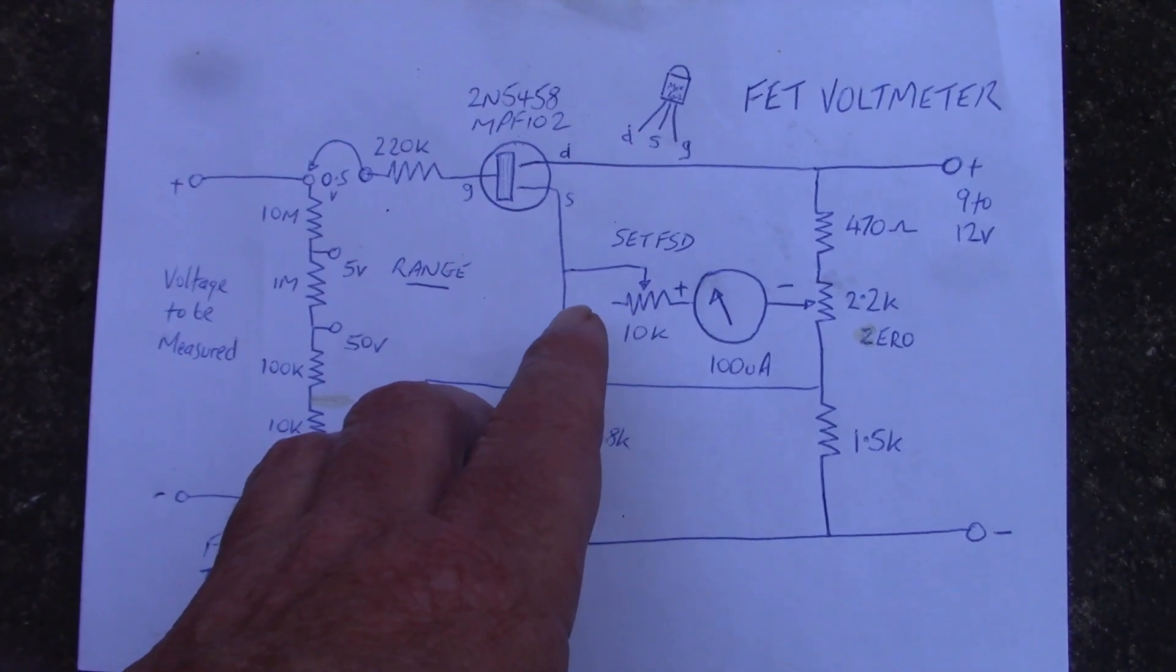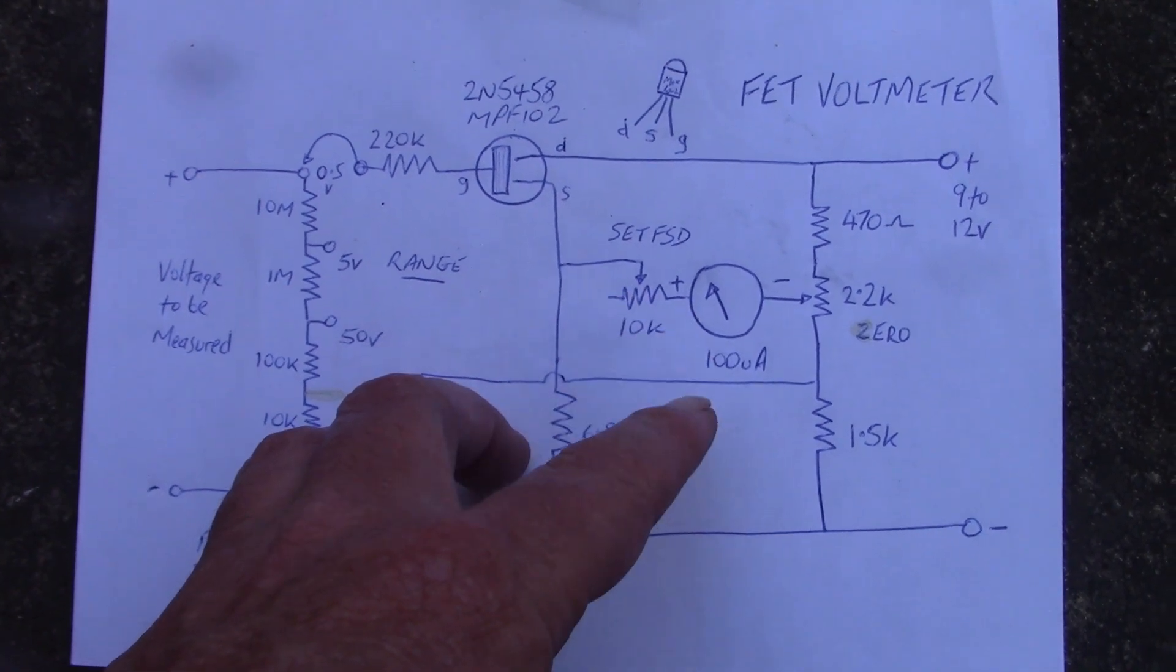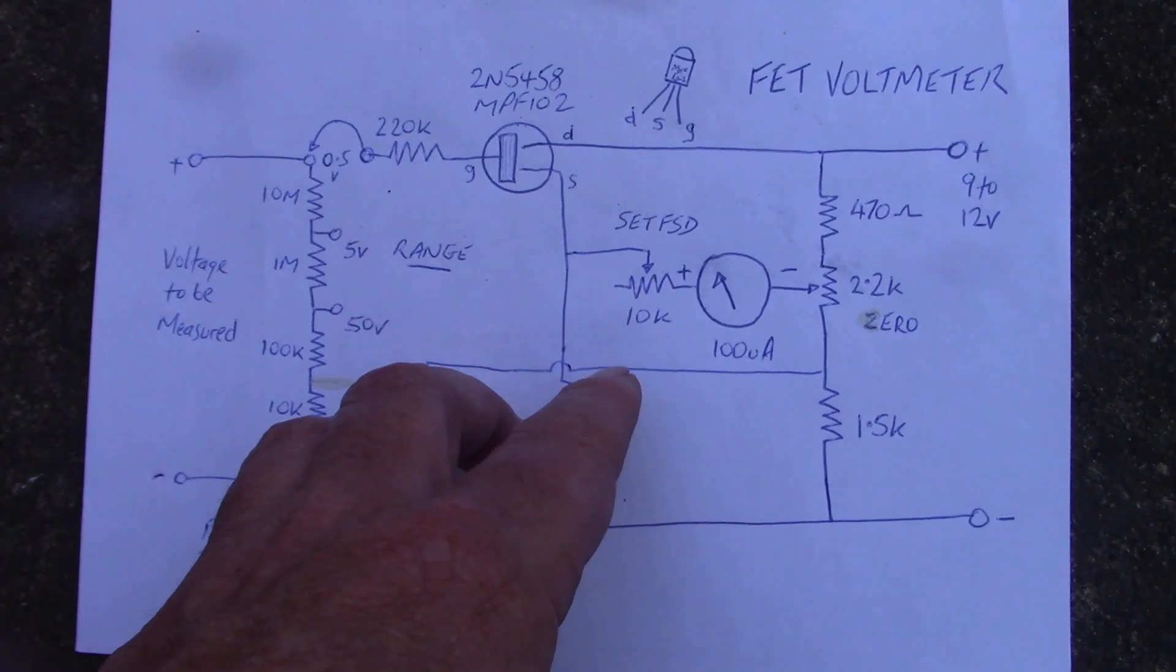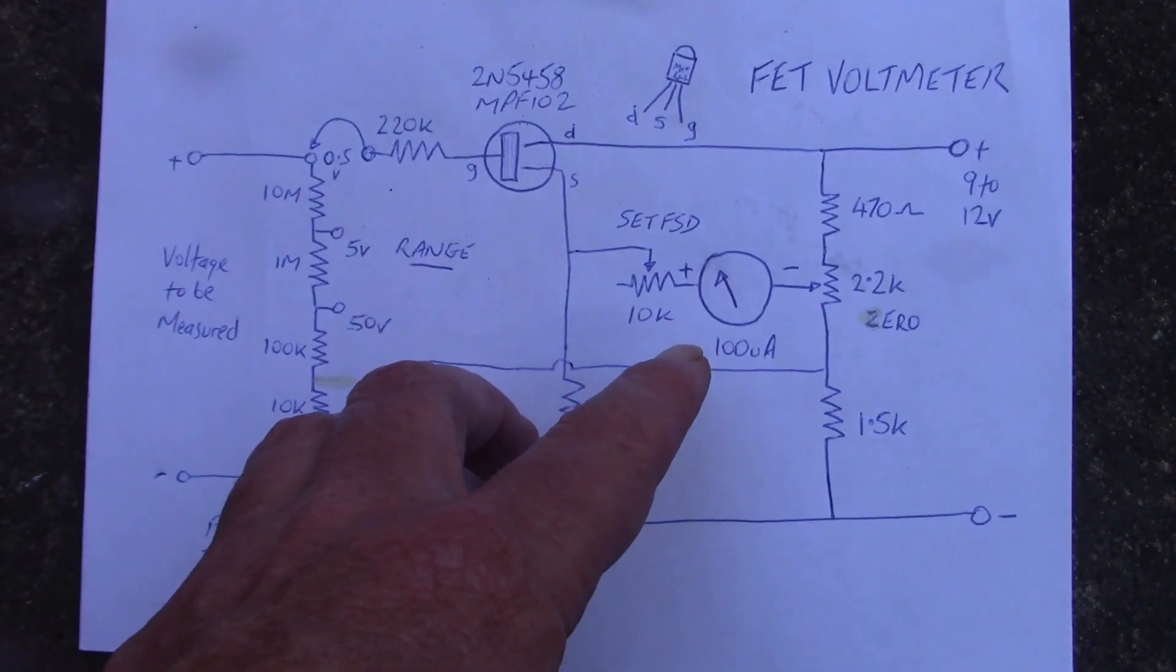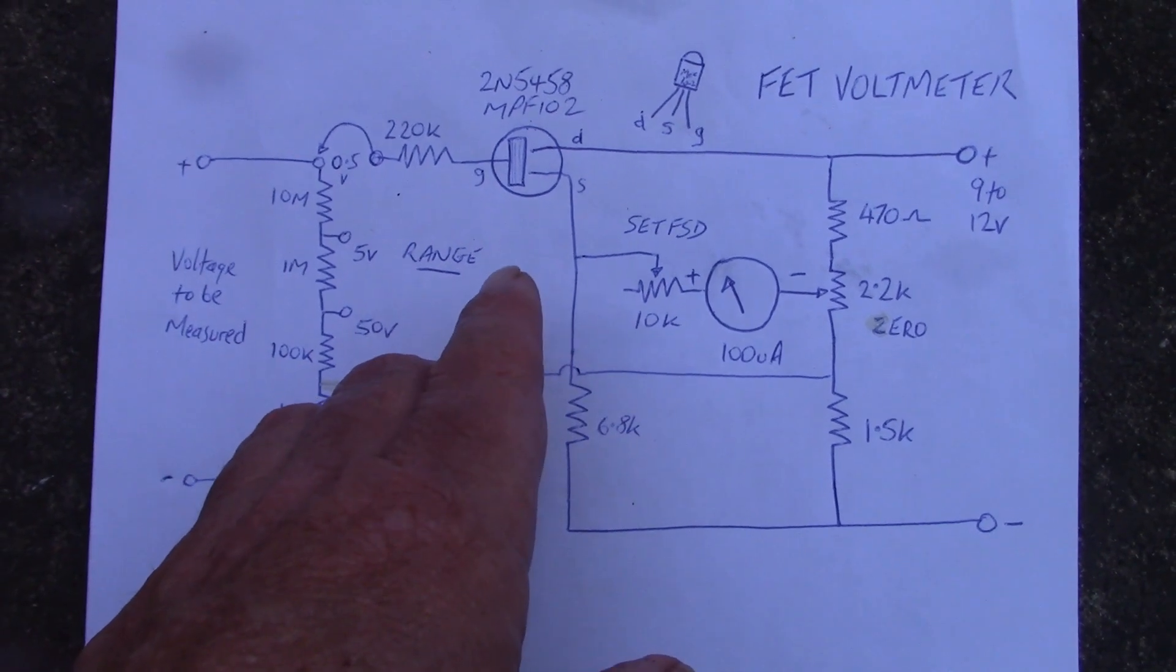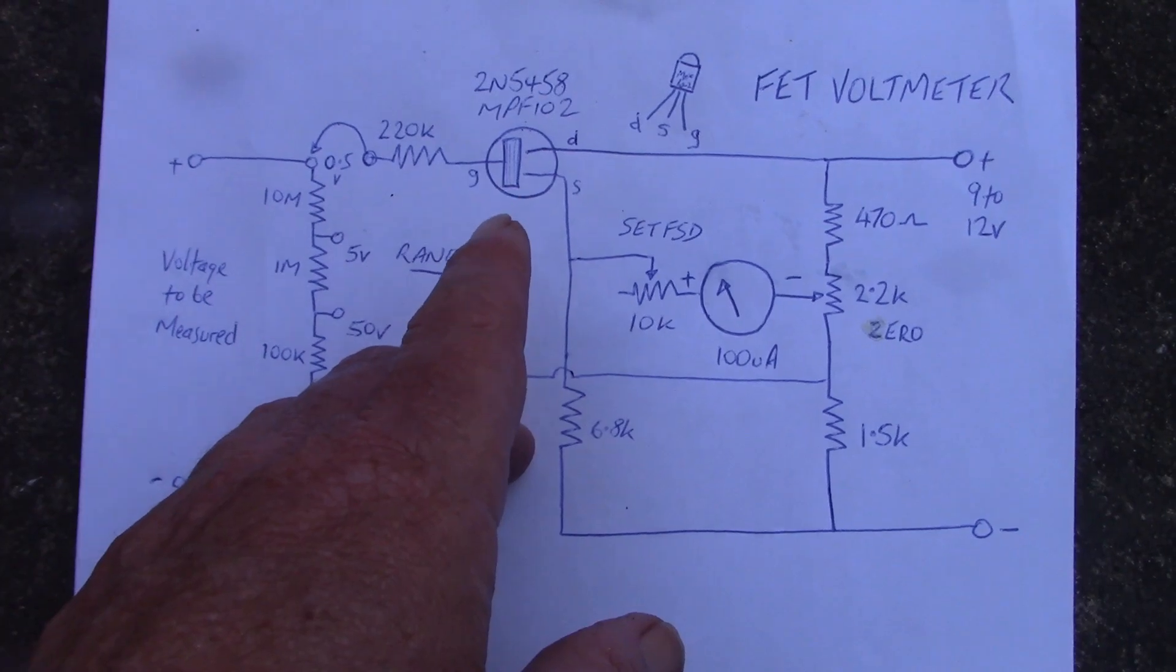And then you go up in frequency and down in frequency. And when it gets to 70% of full scale, then you stop. That gives you your upper limit and your lower limit. You take the difference and then you can work out the Q from that, noting the center frequency.